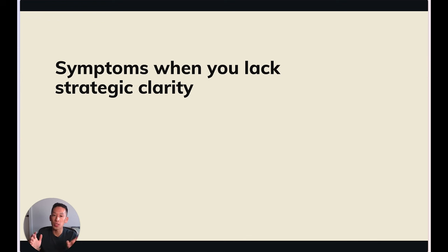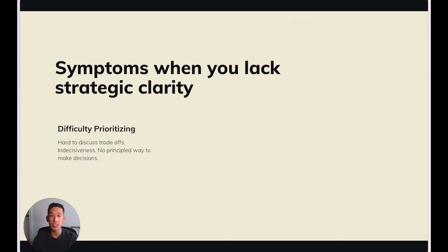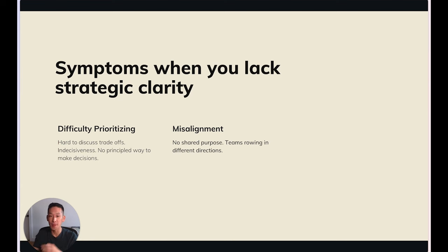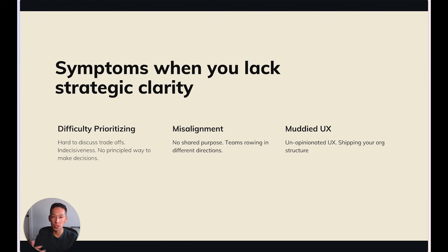When we don't do a good job of that, there are some worrying symptoms that start to crop up. The first is you have a really hard time prioritizing — it's ambiguous which activity is actually going to drive the most impact, and you don't have the systems in place to address those tradeoffs in a principled way. The second is misalignment within teams. Without proper context, people will rely on their individual opinion rather than align towards a shared purpose, and you end up with different teams prioritizing different outcomes that make sense locally but might not be optimal for the entire business. You also start seeing that your UX feels muddied and unopinionated — when the strategy isn't clear, the team may start making inconsistent and compromised choices. This is where the term 'shipping your org structure' surfaces.